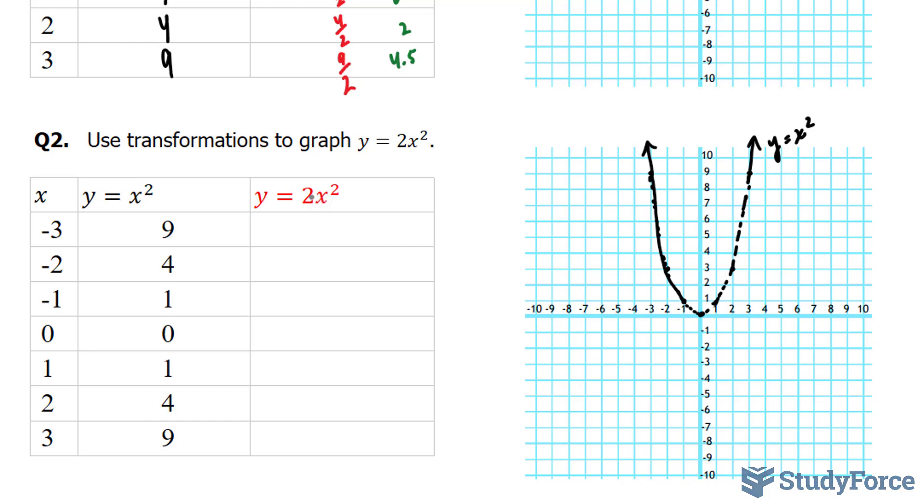And now we'll find the y coordinates for this equation. Whatever y value you got for x squared, you're going to multiply it by 2. So we end up with 18, 4 times 2 is 8, 2, 0, 2, 8, and 18. So technically, by putting this a in front of the x squared term, y is happening twice as fast. Here's what I mean.